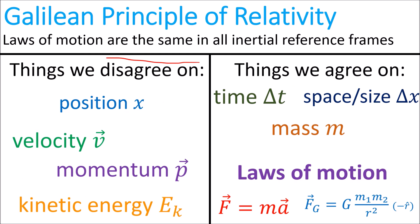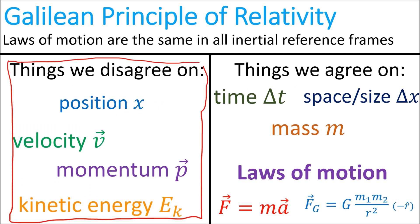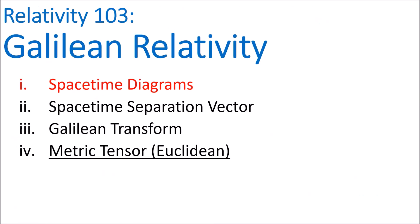Now, of all these quantities that people in different reference frames will disagree on, the most important is the position of objects, x. And to understand how observers disagree on position in Galilean relativity, we'll begin by studying spacetime diagrams.